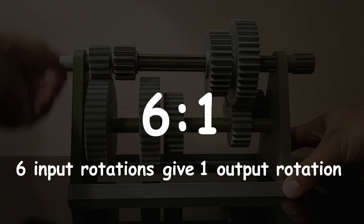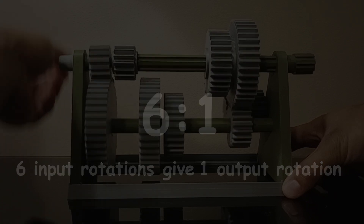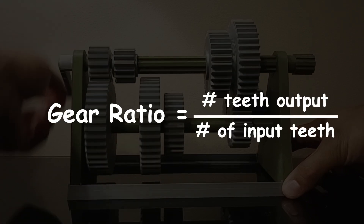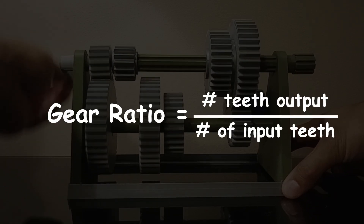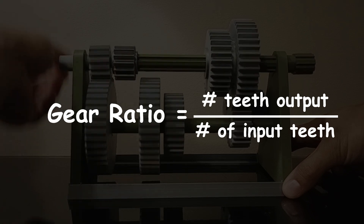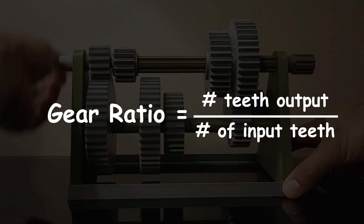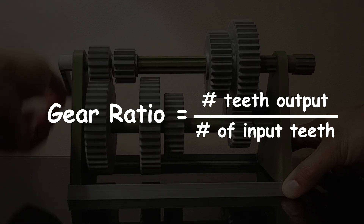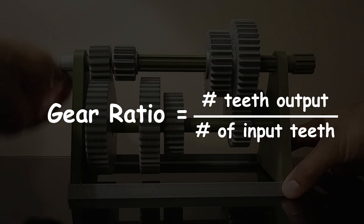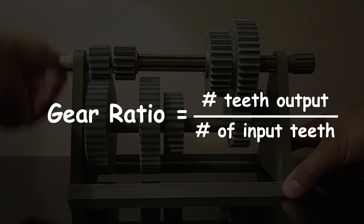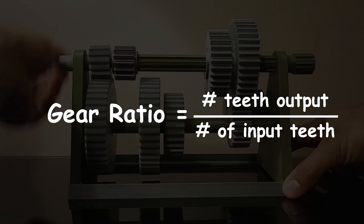Now I'll show you how I found that ratio using this formula, which says that the ratio between two gears is the number of teeth on the output gear divided by the number of teeth on the input gear.